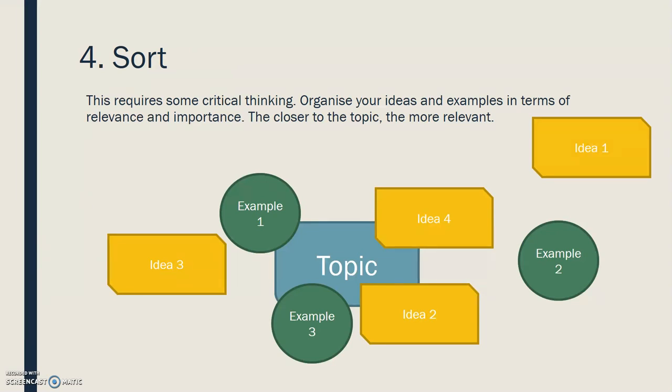This requires some critical thinking and it can actually be quite a fun process because you have to actively justify why you've chosen these ideas and examples. The point of this step is to organize your ideas and examples in terms of relevance and importance. The closer to the topic, the more relevant. What I like to do is to have an A3 sheet of paper or an A4, whatever you prefer. Write the topic in the middle of the page and you generate your ideas or you sort your ideas around the topic. The closer your ideas or examples are to the topic, the more relevant you think they are. Now, obviously, you don't want to do this just randomly. You want to think about why some ideas are more relevant than others. This is part of the thinking process before actually writing. I find it's useful to use post-it notes or sticky notes for this so that you can move things around if you change your mind.